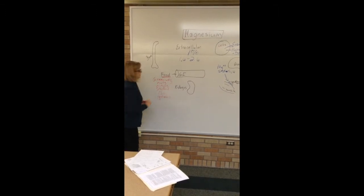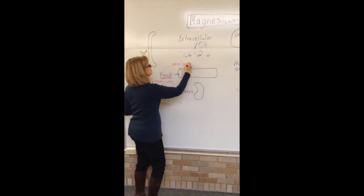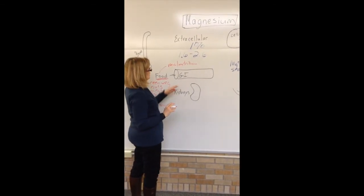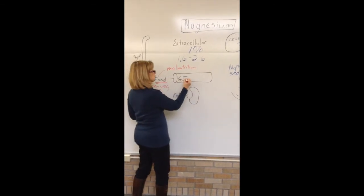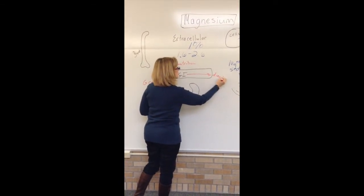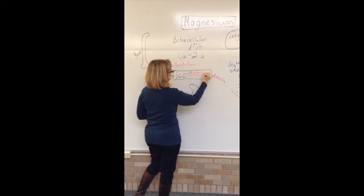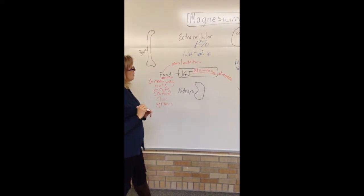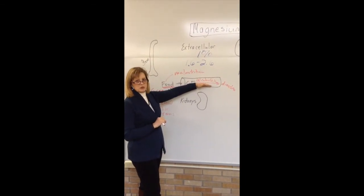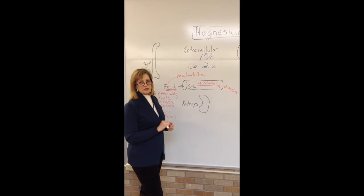We have quite a few foods that have magnesium, but if we don't eat enough — if we have malnutrition — we'll potentially have low magnesium. Another way to have low magnesium is to lose it through the GI tract, such as with diarrhea. Alcoholics also have problems with absorption and often eat poorly, which can contribute to tremors and DTs when trying to withdraw.